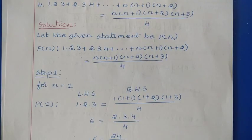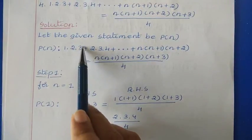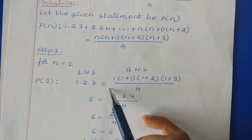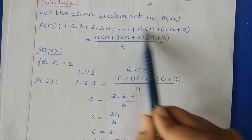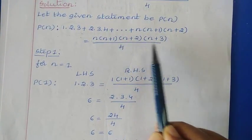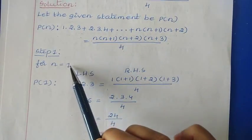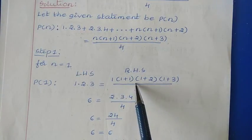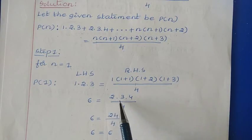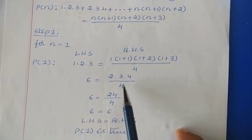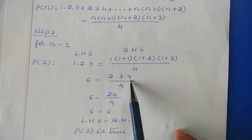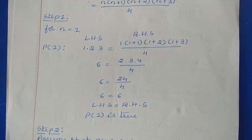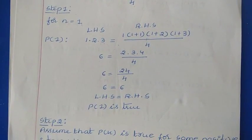The left hand side for N=1 means the first term, which is 1×2×3 = 6. For the right hand side, N(N+1)(N+2)(N+3)/4, putting N=1: 1×2×3×4/4 = 24/4 = 6. So 6 = 6, LHS equals RHS. Therefore the given statement is true for N=1.